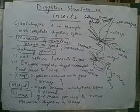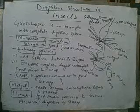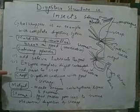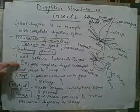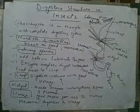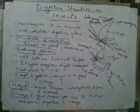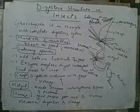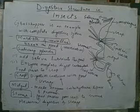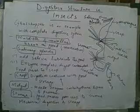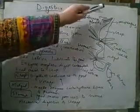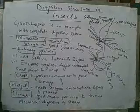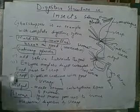The other function of salivary glands is producing enzymes. The enzyme is amylase — which is for carbohydrate digestion. Carbohydrate digestion starts from the mouth. The food moves via the esophagus from the mouth, and the digestion by amylase continues in the crop.